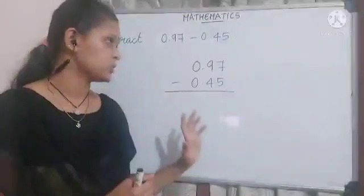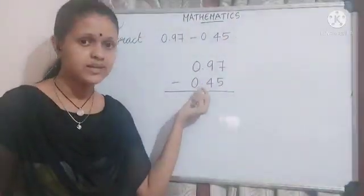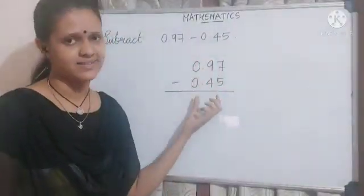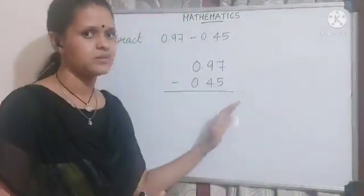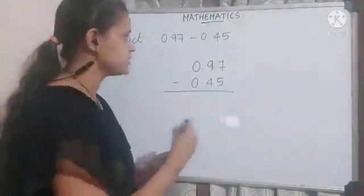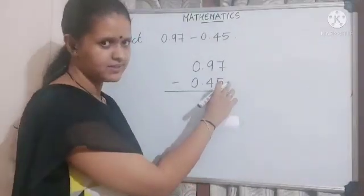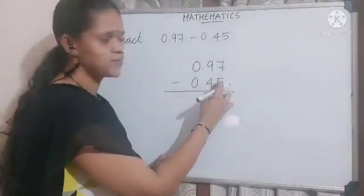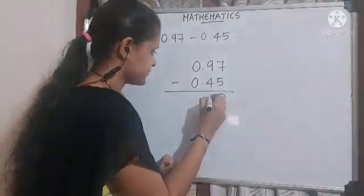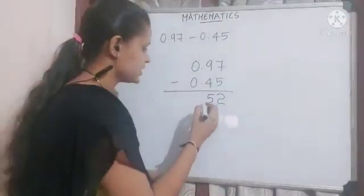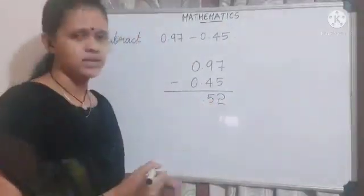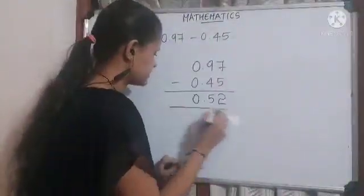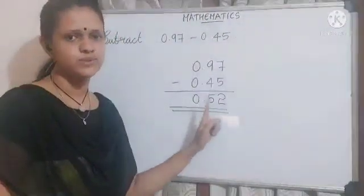Also make sure that the decimal point and the digits with the same place values are aligned. Next, subtract from right to left. 7 minus 5 is 2. Then 9 minus 4 is 5. Put the decimal point here. 0 minus 0 is 0. Our answer is 0.52.